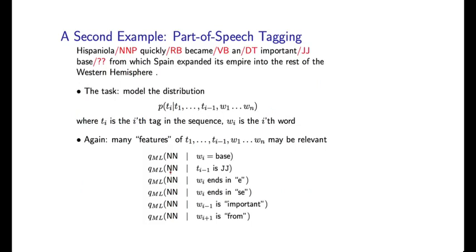The thing to realize here is that in coming up with this estimate, we could look at all kinds of features of the history or context. If we look at this particular example here where we're trying to tag the word base, so we're trying to estimate a distribution of tags at this position, we could look at various things. Say we're trying to estimate the probability of seeing the word base tagged as an NN, that's a common noun, a singular noun in English. We could condition on the fact that the current word being tagged is the word base. Or we could condition on the fact that the previous tag, t_{i-1}, is the tag JJ.